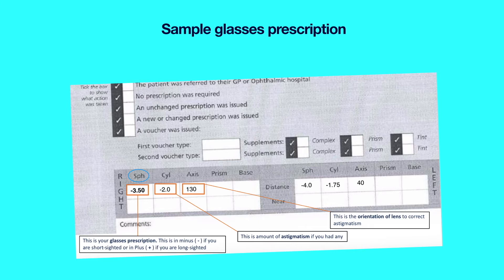If this was a long-sighted patient, the SPH or sphere column would have had a plus power.